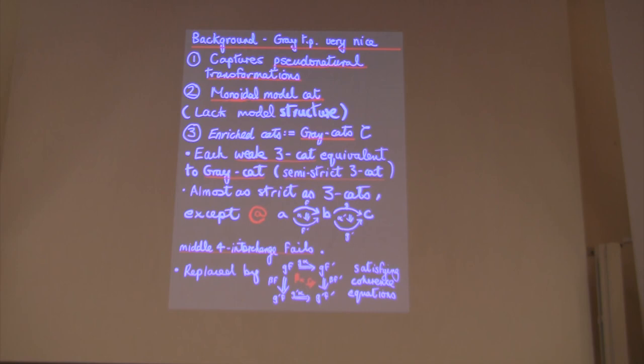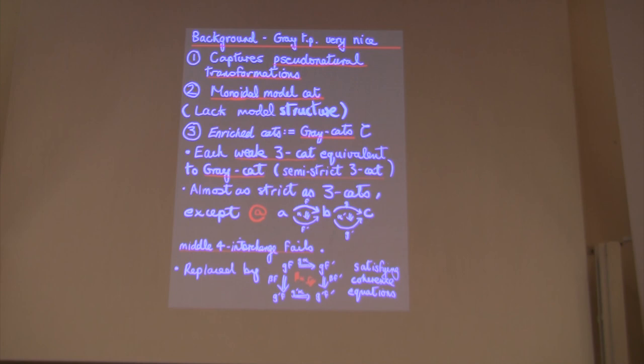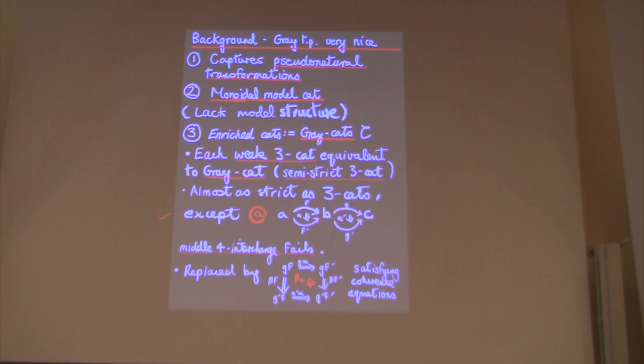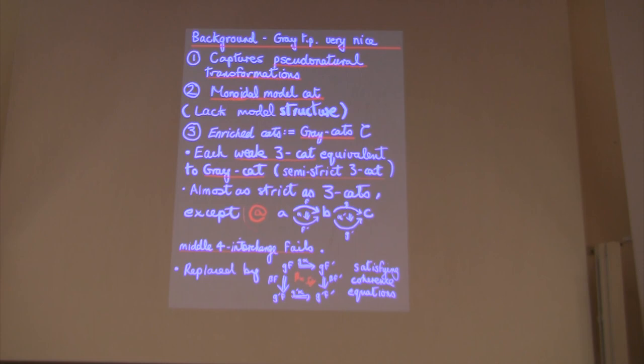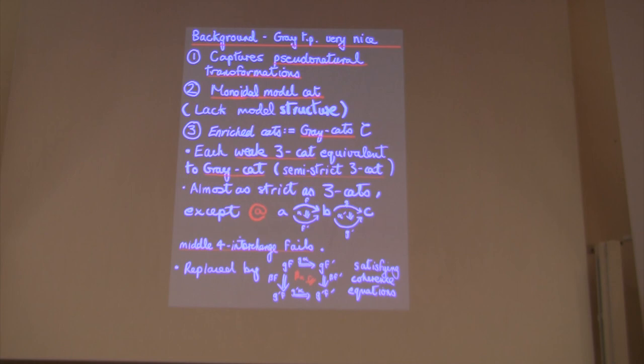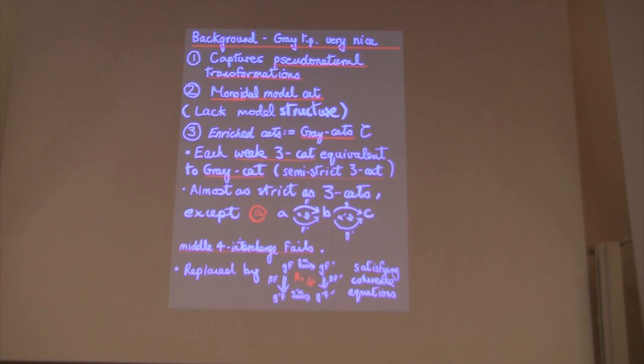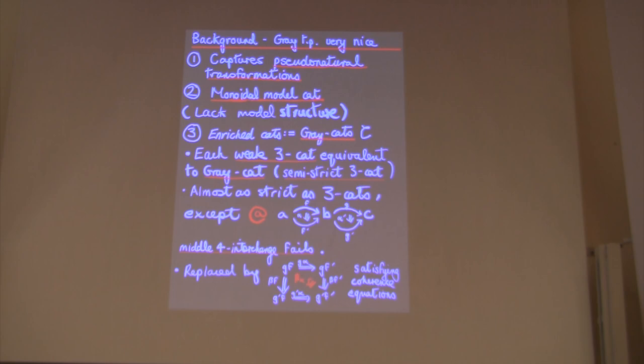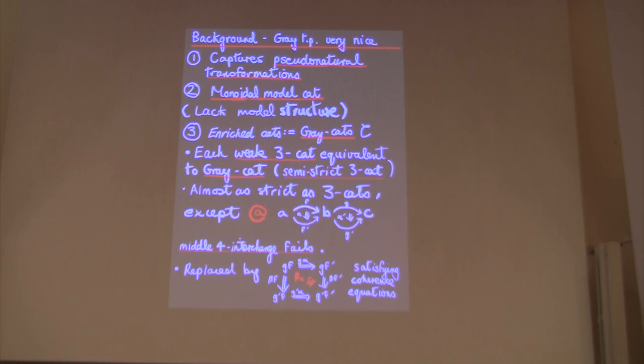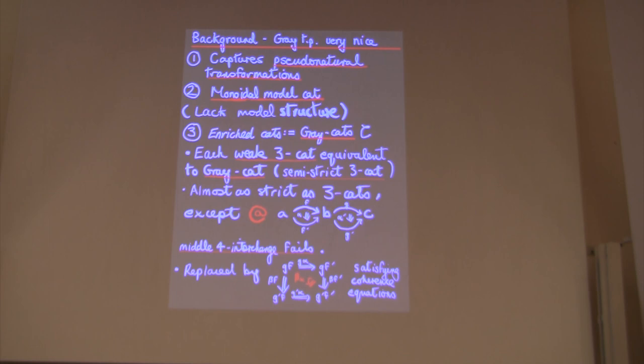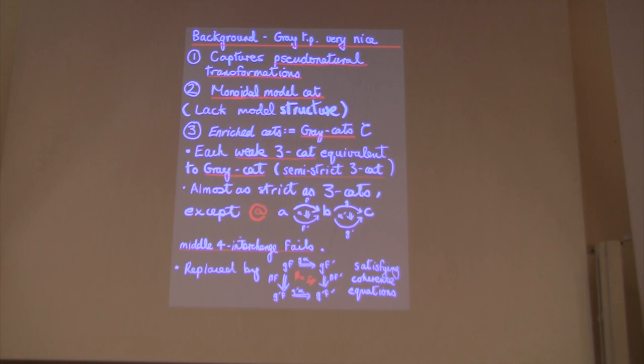What do they actually involve? I won't say exactly, but they're almost as strict as three categories, but our old friend the middle four interchange fails. What you know from MacLane's book is that if you have a diagram of natural transformations like this, by naturality there's only one way to compose them. You can go this way or this way or this way or this way. In a two category, because cats are two categories, they will agree by naturality. But in a Gray category they don't agree, but you have an invertible three-cell between them. And that satisfies the coherence conditions analogous to pseudo-naturality equations.